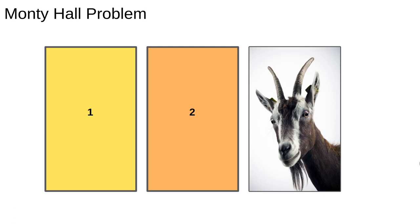The Monty Hall problem asks which is the best strategy: to stick or to switch? Looking at the situation it seems obvious that sticking or switching makes no difference — there are two closed doors, one has a prize, one has a goat, it must be even odds 50/50 no matter if I stick or if I switch, right?